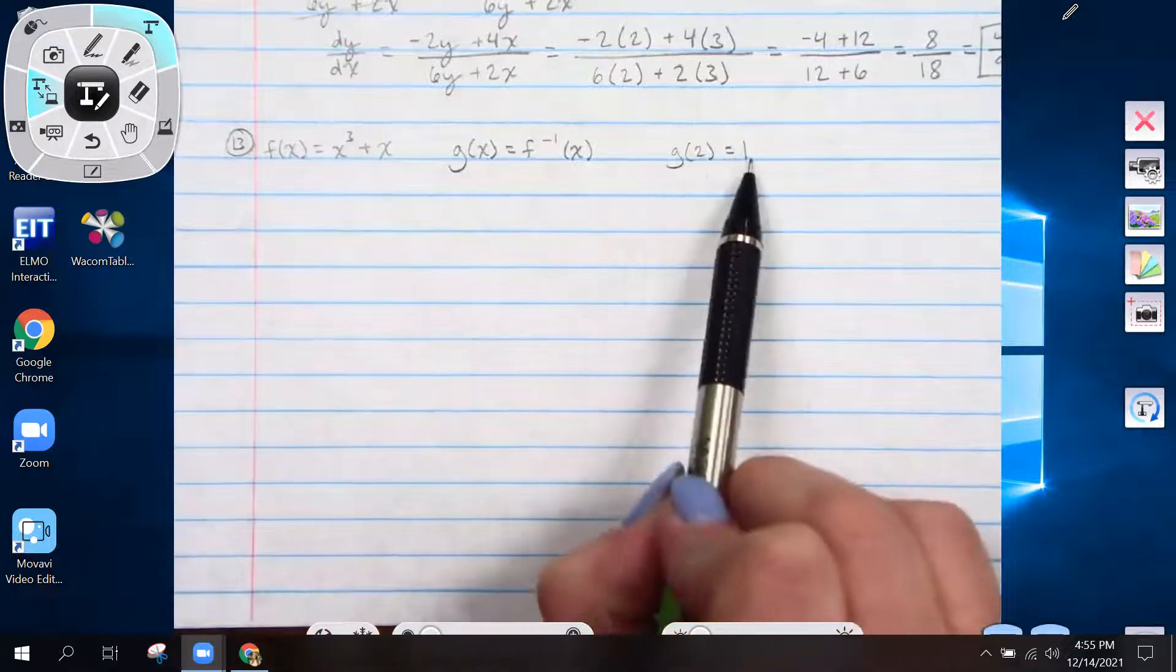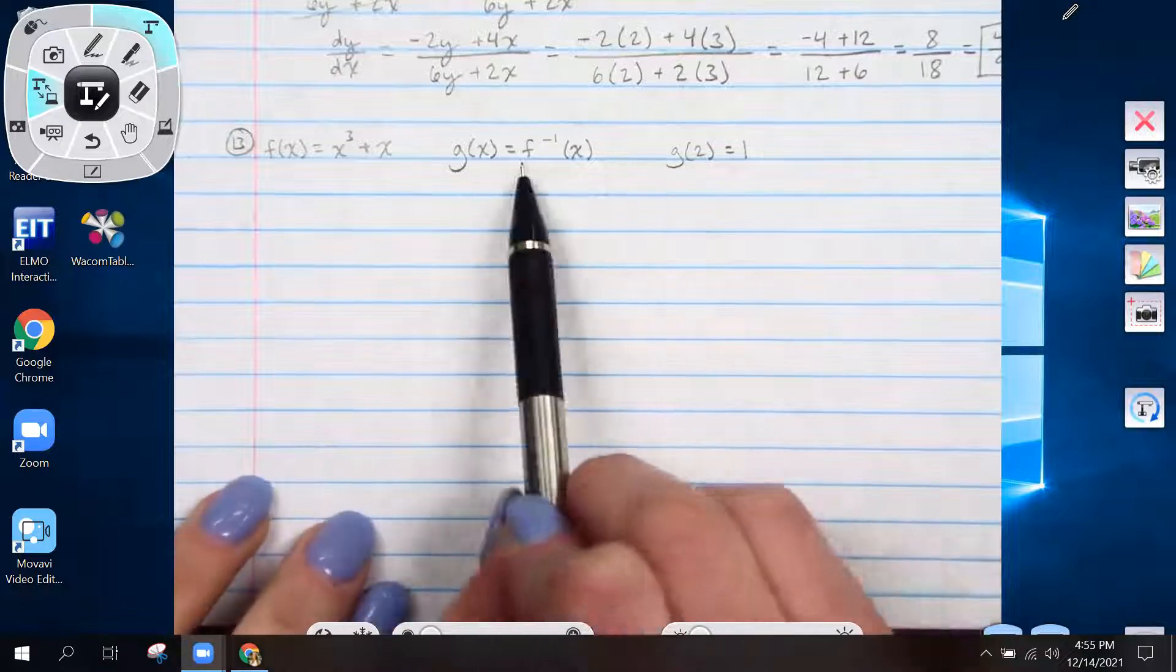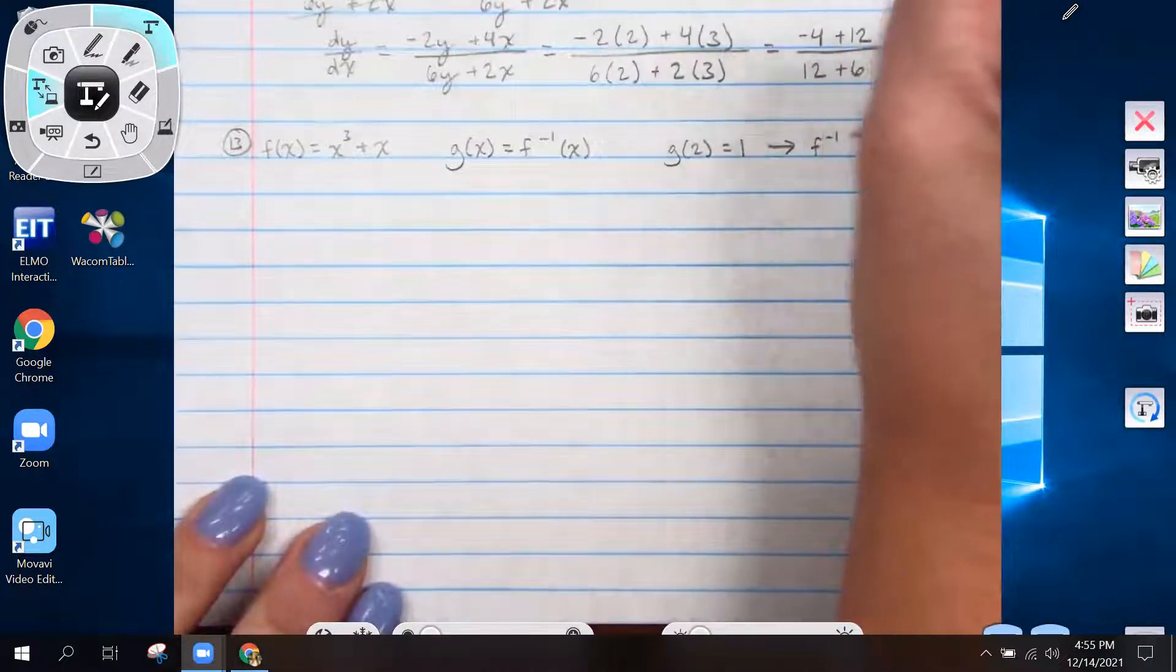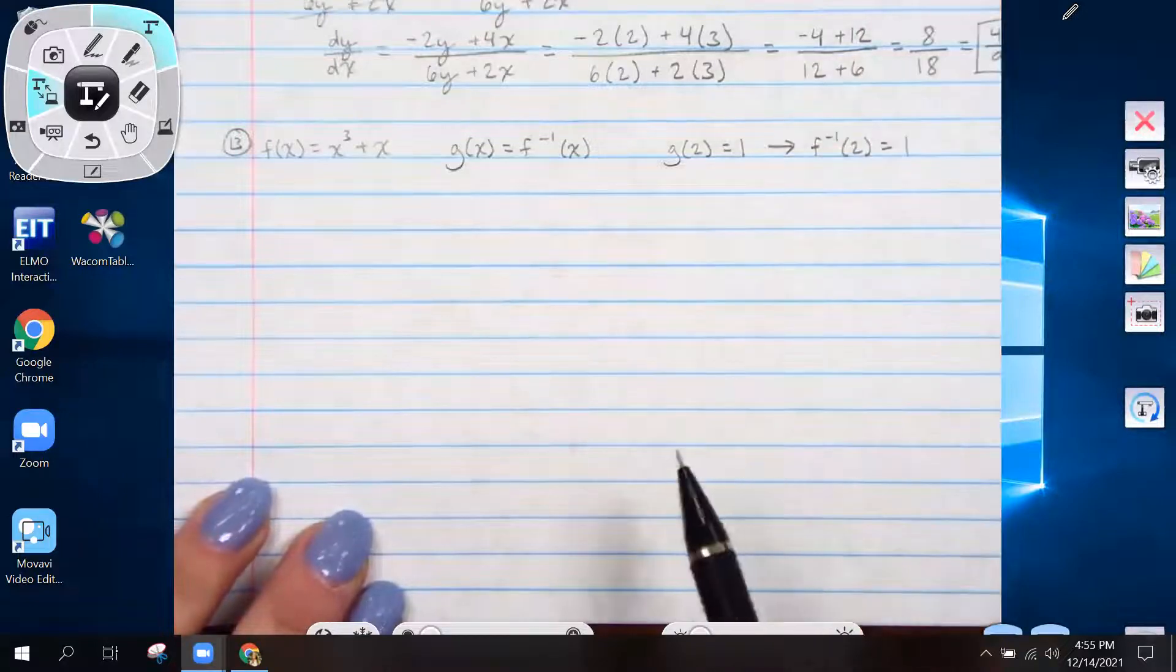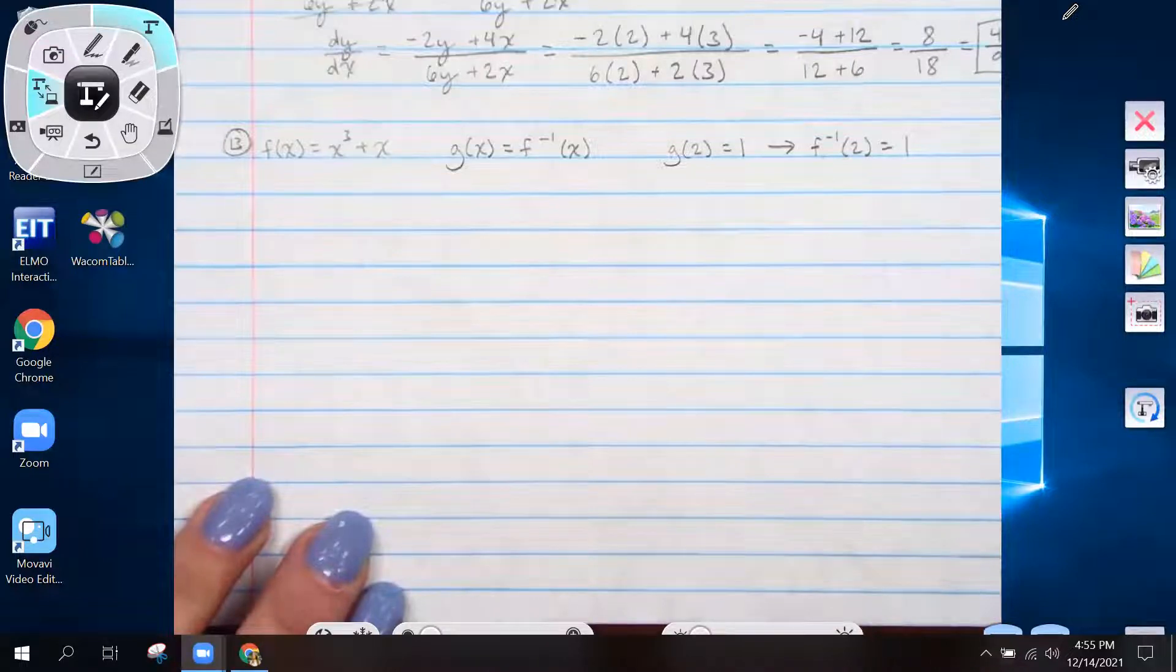So this g of 2 equals 1 also tells us because g is f inverse, this also means that f inverse of 2 equals 1, because g and f inverse are equal. Those are the same thing.